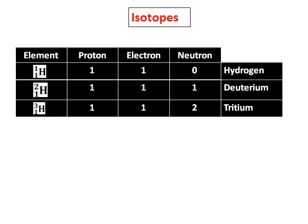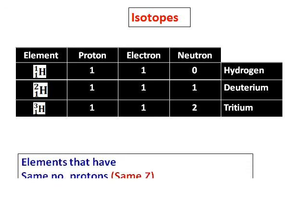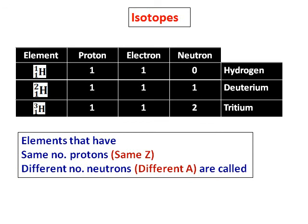Because all of them have only one proton, they have some relation with isotopes. Elements that have same number of protons, that is, same Z and different number of neutrons, that is, different A, we call them as isotopes.